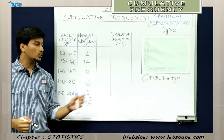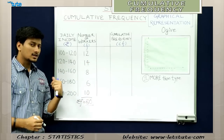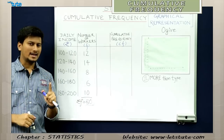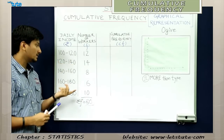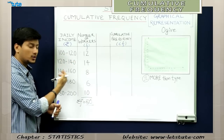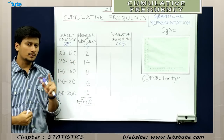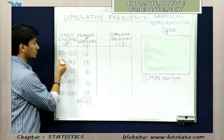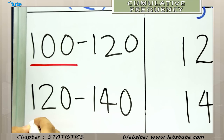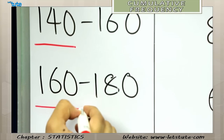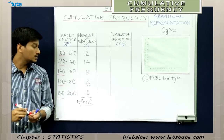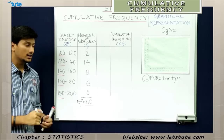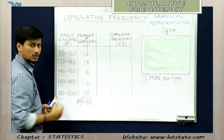Cumulative frequency is also denoted as cf. Before we calculate the cumulative frequencies, let's return to why it's called the 'more than type'. In less than type, we take the upper limits — less than 120, less than 140, less than 160. But in the more than type, we take the lower limits, saying something more than 100, more than 120, more than 140, 160, and 180. So in more than type, we work with lower limits only.